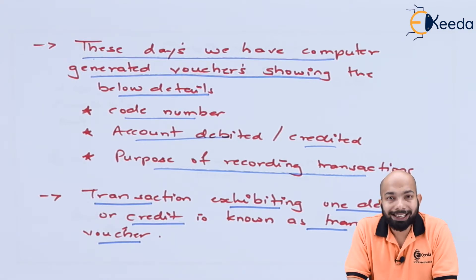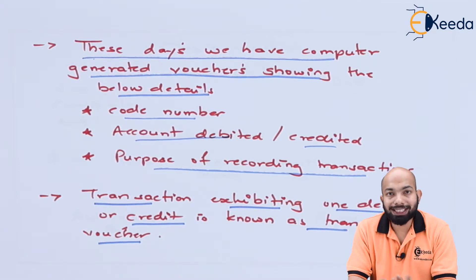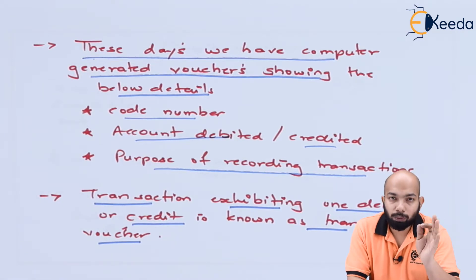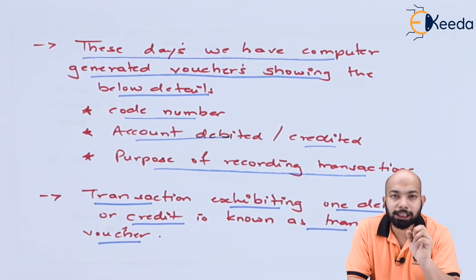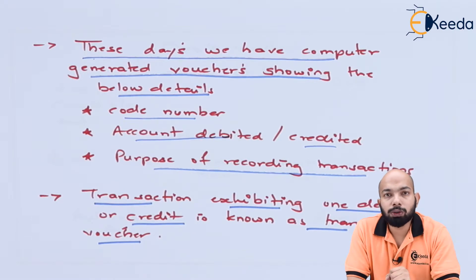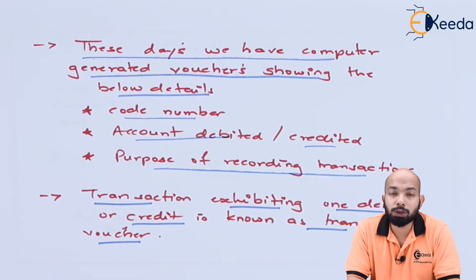When multiple transactions happen at one single time — that is, both debit and credit are part of it — such vouchers are known as journal vouchers. The difference between transactional and journal vouchers is that a transactional voucher has only either debit or credit, while a journal voucher has both debit and credit as part of the specific transaction.